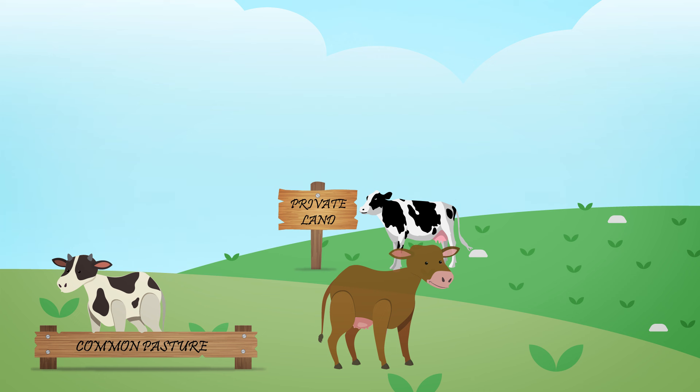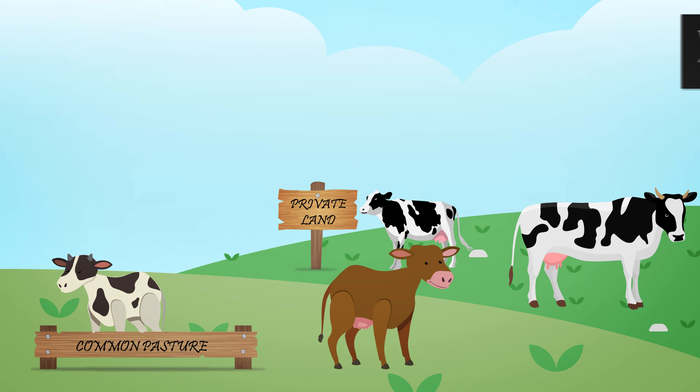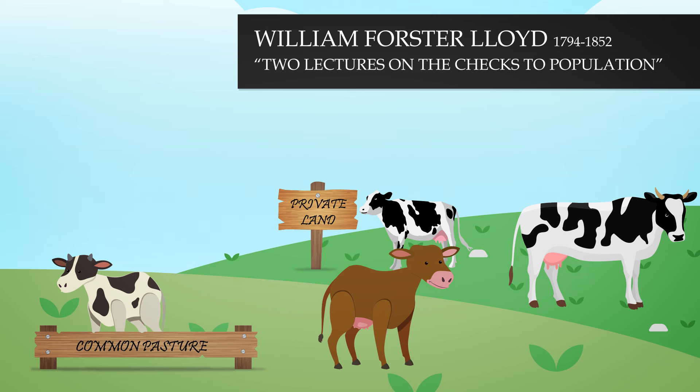However, one could see a vast difference between commons and private lands. In 1833, British economist William Forrester Lloyd asked: Why are the cattle on commons so puny and stunted? Why is the common itself so bare-worn? Why is it cropped so differently from the private lands?